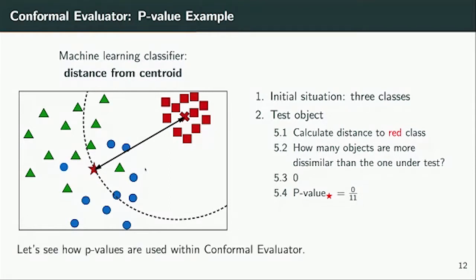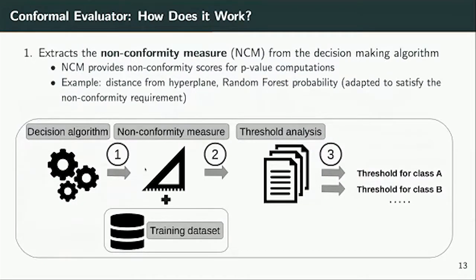Now let's see how these p-values are used within Conformal Evaluator. The first step is to extract the non-conformity measure from the decision-making algorithm. For distance from the centroid that already captures dissimilarity. For the distance from the hyperplane in SVM, we need to adjust the sign since distance from the hyperplane captures similarity, and we need a negative sign to make it work for dissimilarity. Similar reasoning applies to probabilities output from random forests. This is where the algorithm-agnostic property comes from.